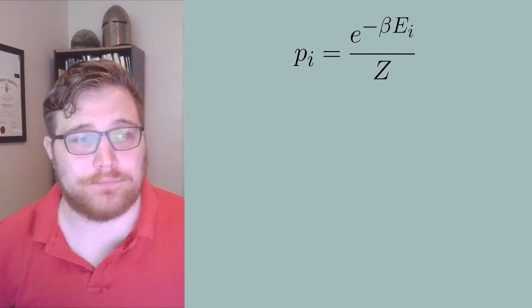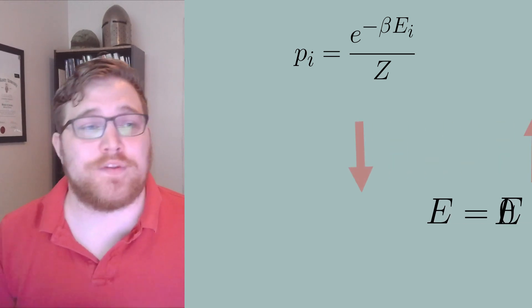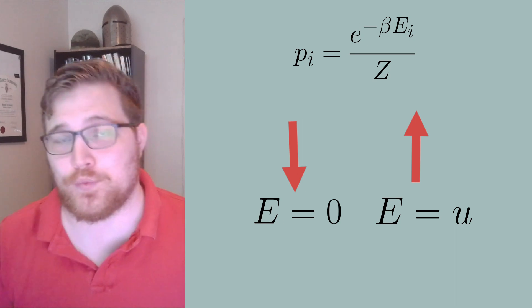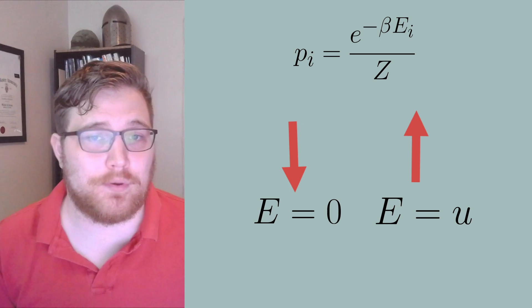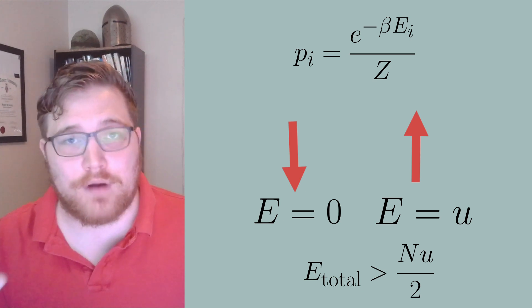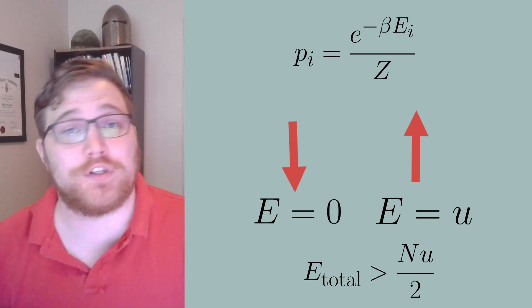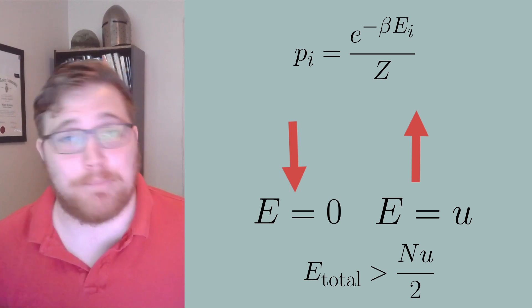Secondly, the temperature defined by the Hertz entropy is inconsistent with the temperature defined for the canonical ensemble. To see this, consider a system with an incredibly large number of spins. We will define it so that a spin down gives zero energy and a spin up gives some small energy u which will be greater than zero. If we take our system to be defined in the microcanonical ensemble and we pick an energy for that system such that the energy is greater than the number of spins times our up energy divided by two, then we are in a regime where the Boltzmann entropy will give us a negative temperature and the Hertz entropy will give us a positive temperature.